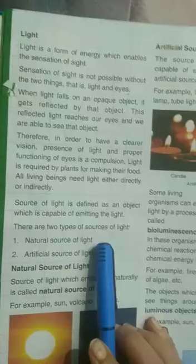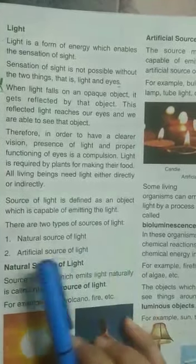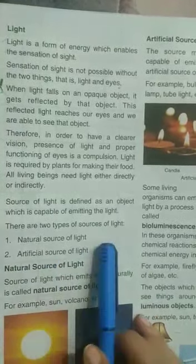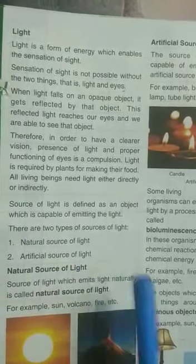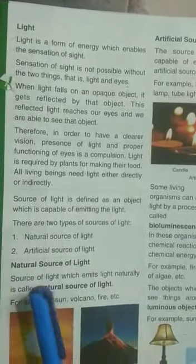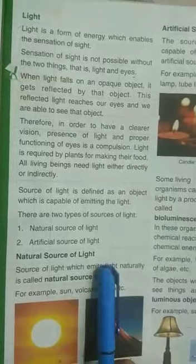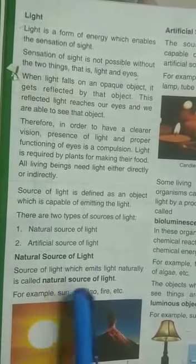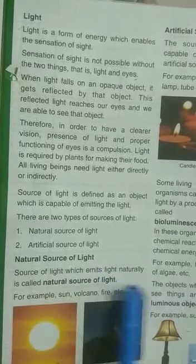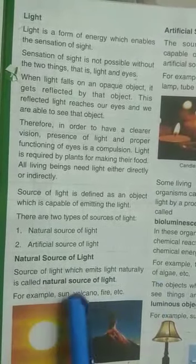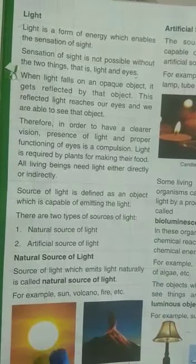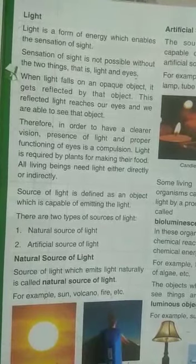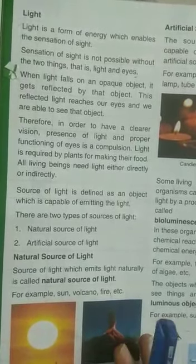There are two types of sources of light. The first is natural source of light and the second is artificial source of light. A source of light which emits light naturally is called a natural source of light. For example: sun, volcano, fire, etc.